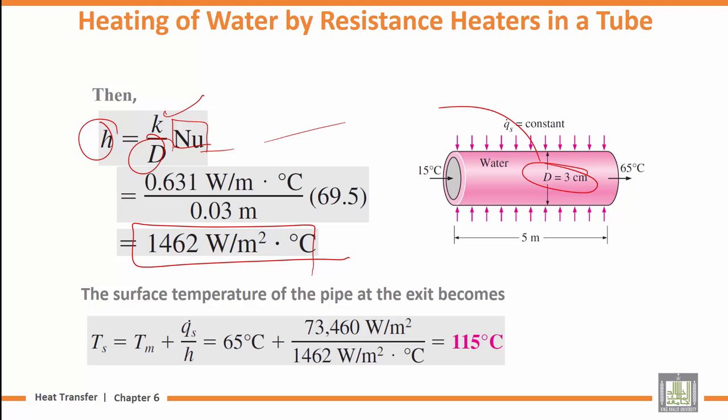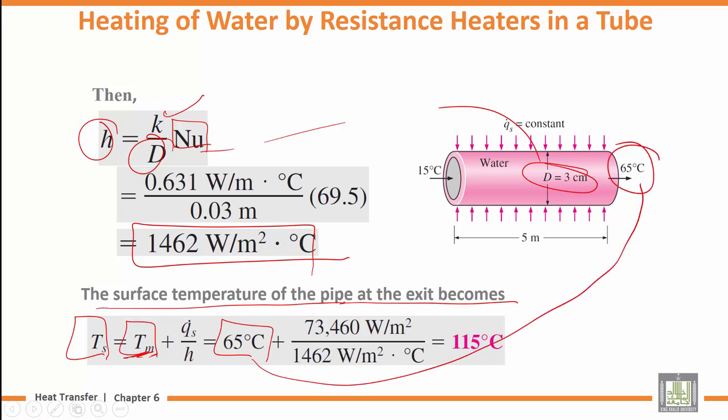The surface temperature at the exit: T_s at exit equals T_m at exit, which is 65 degrees, plus Q over h times A_s. The surface temperature is 115 degrees Celsius. Peace be upon you.